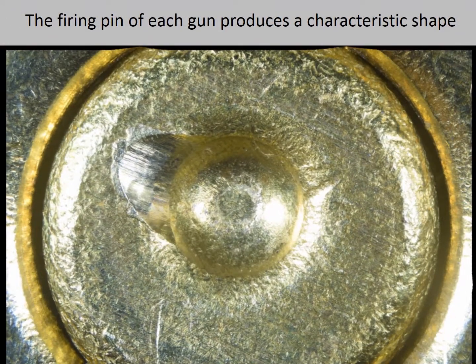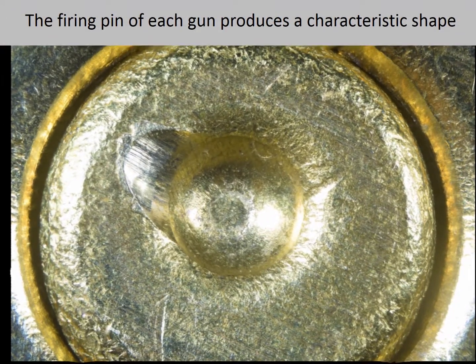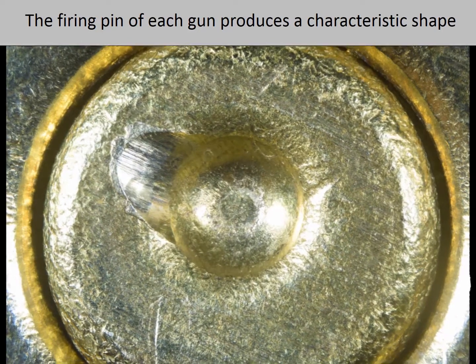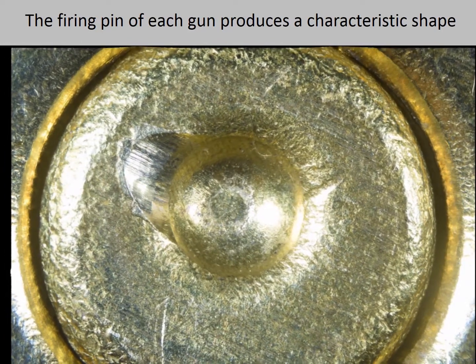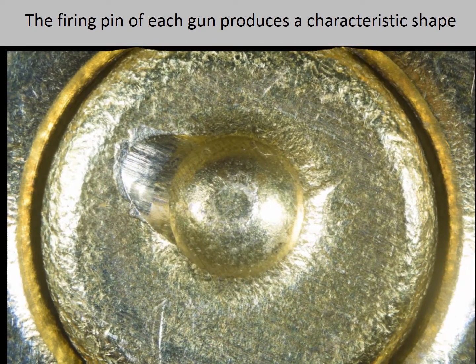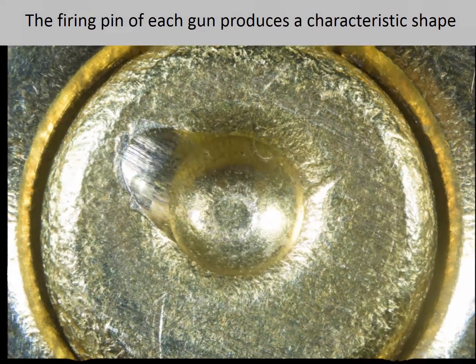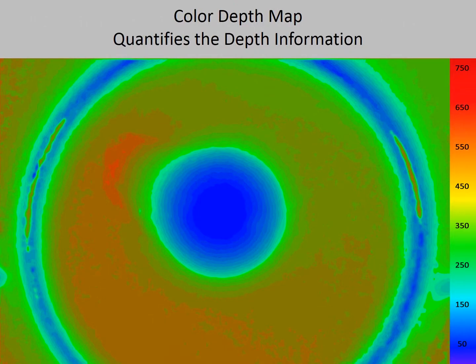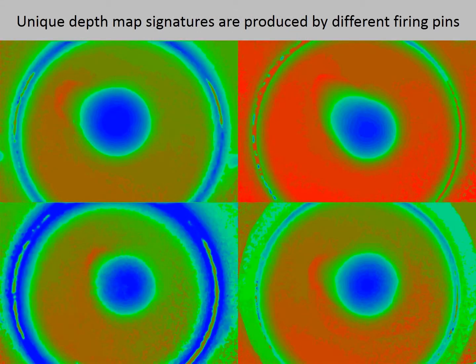Here is a three-dimensional video of the firing pin impression made using a different gun. Each firing pin of each gun produces a characteristic shape. Here is the color depth map that corresponds to this particular firing pin. Here are the depth maps produced by the firing pins of four different guns — each firing pin produces a unique depth map signature.